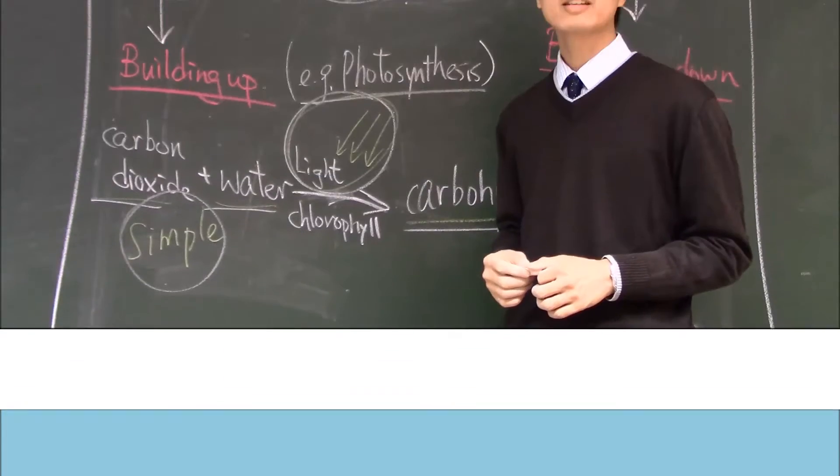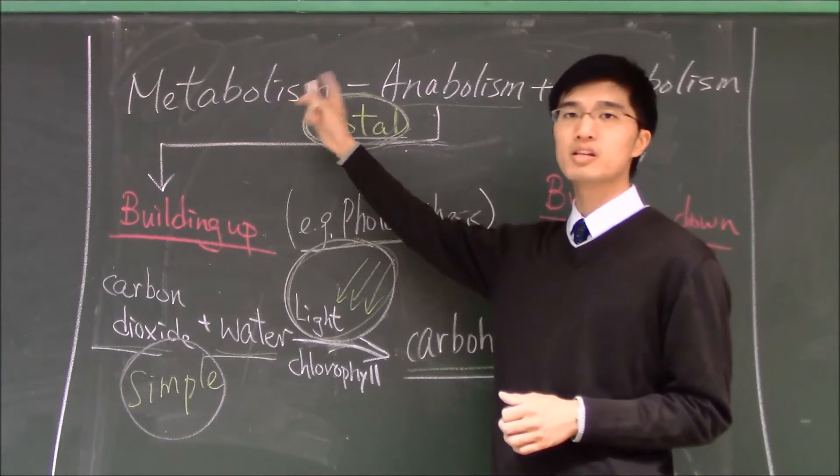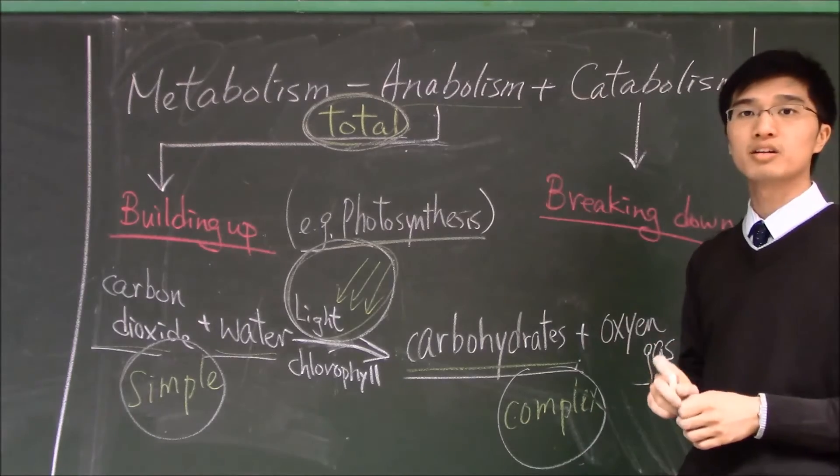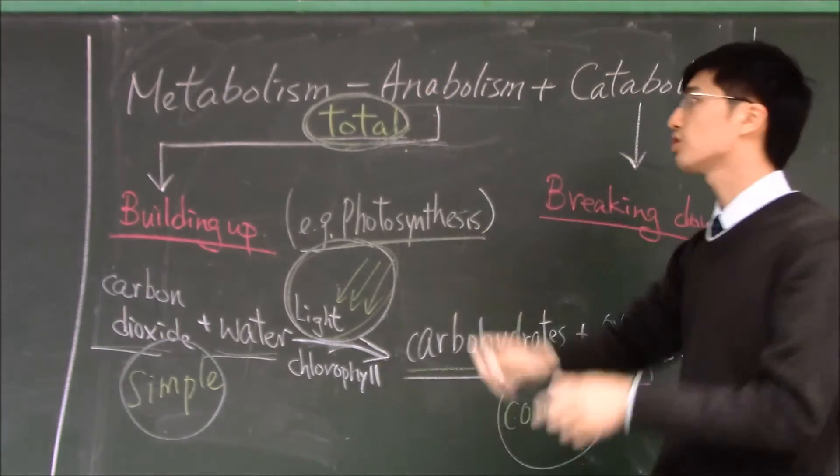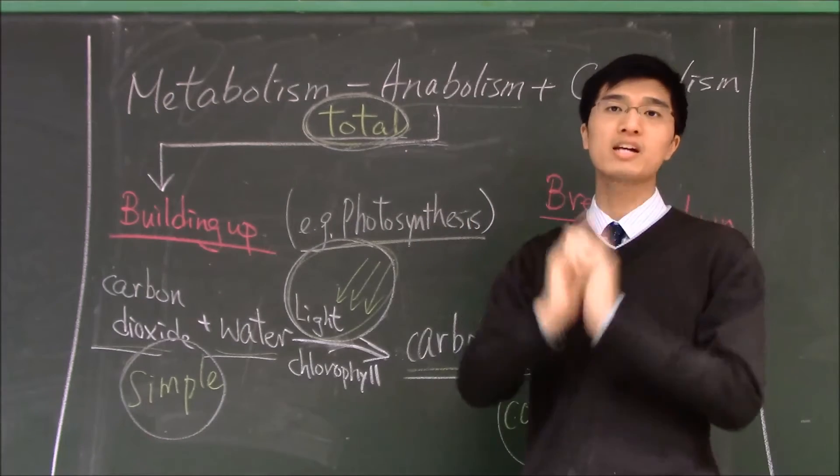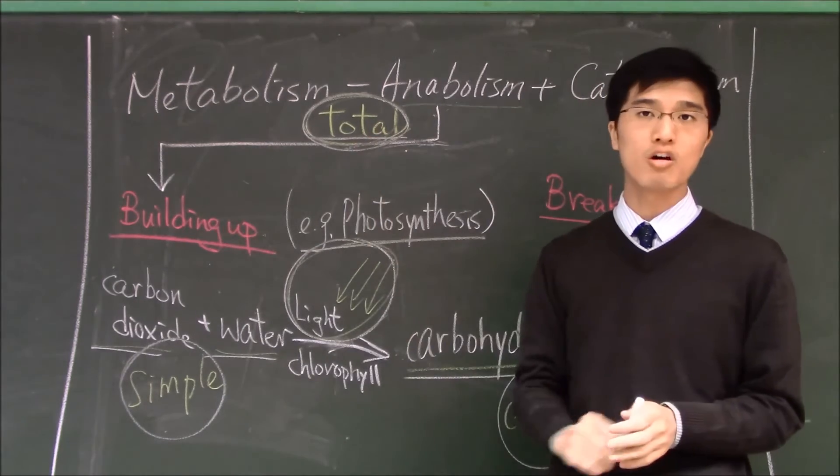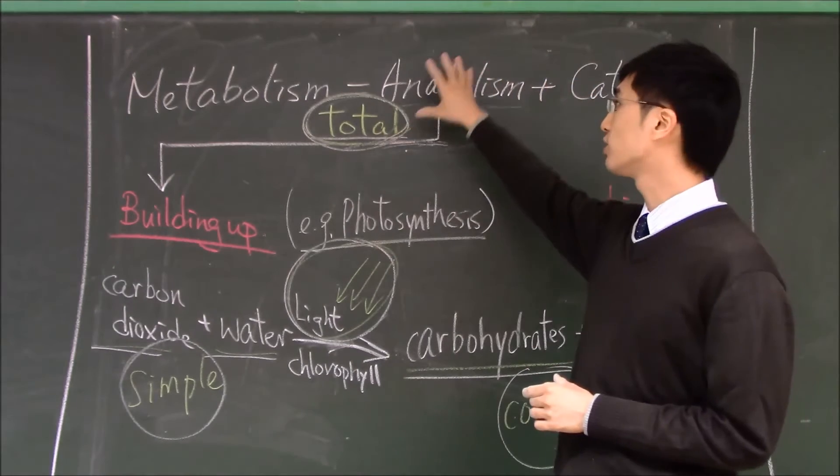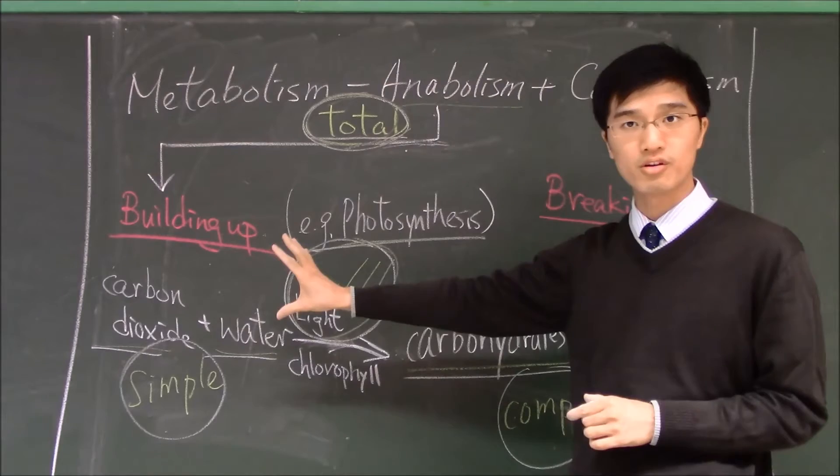Let's start the first part. Metabolism equals anabolism and catabolism. It's an equation to show that metabolism is the total reaction, the total reaction of building up something and breaking down something.